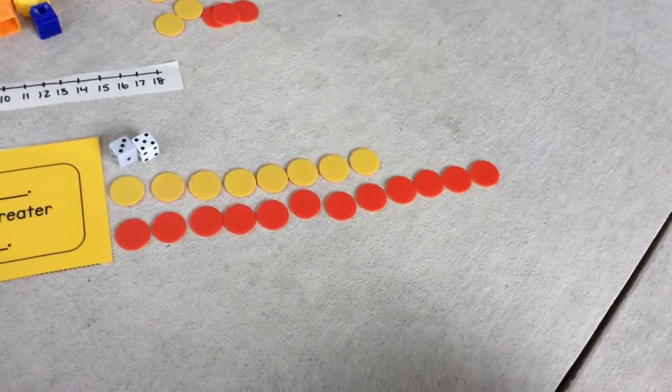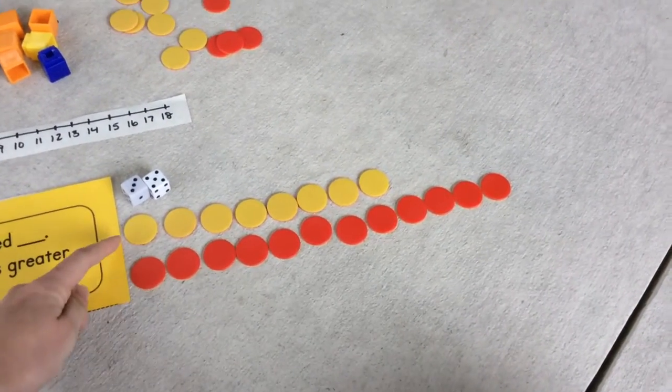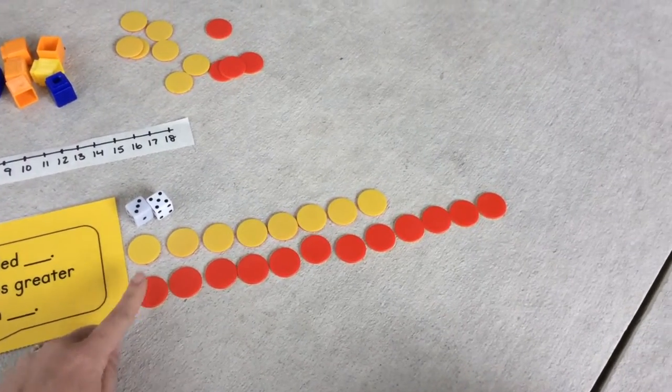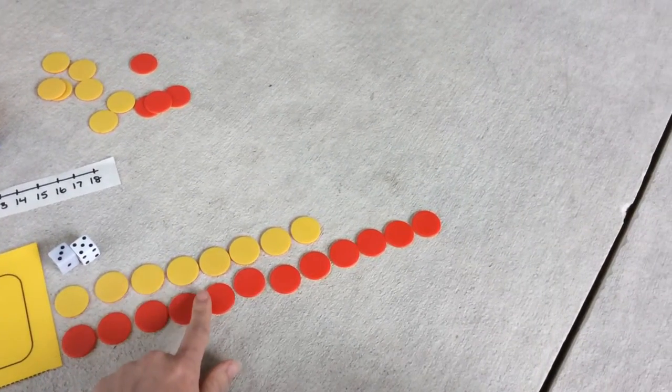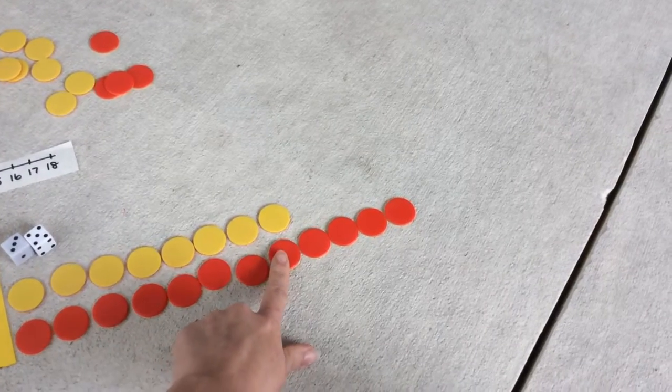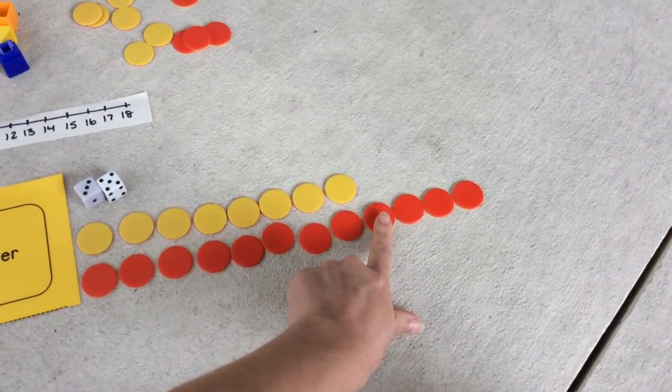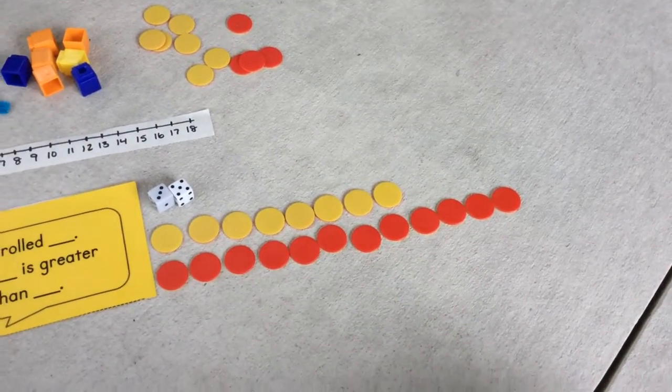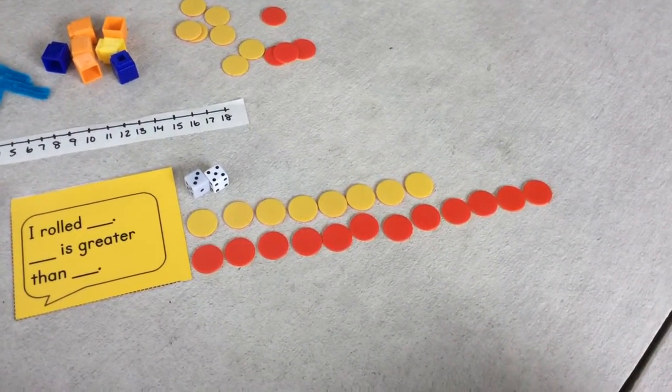If I look at my two sets and compare them, here is eight and here is 12. I see that if I match them up to give them a buddy, there are four more red that do not have a buddy. So 12 is greater than eight.